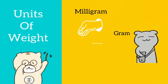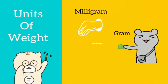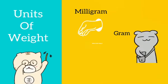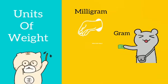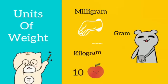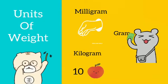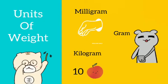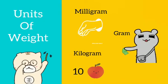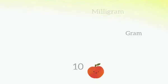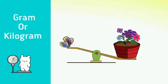Now the gram. One gram is equal to about the weight of a currency note. And then there is kilogram. One kilogram is about equal to ten apples. Now we will compare the weight in gram or kilogram.